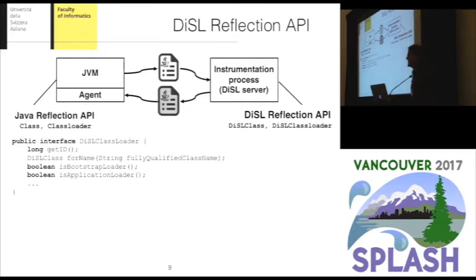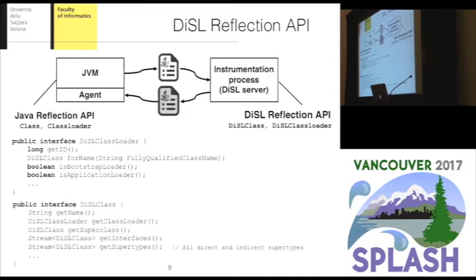Similarly, the purpose of DieselClassLoader is to replicate class loader namespaces that would be available inside each instance of a JVM ClassLoader in the Java Reflection API. The Diesel Reflection API includes methods for getting a unique ID to identify each class loader, as well as methods on DieselClass to retrieve reflective supertype information — specifically, it can be used to retrieve either the direct supertypes or the indirect ones of a given class.